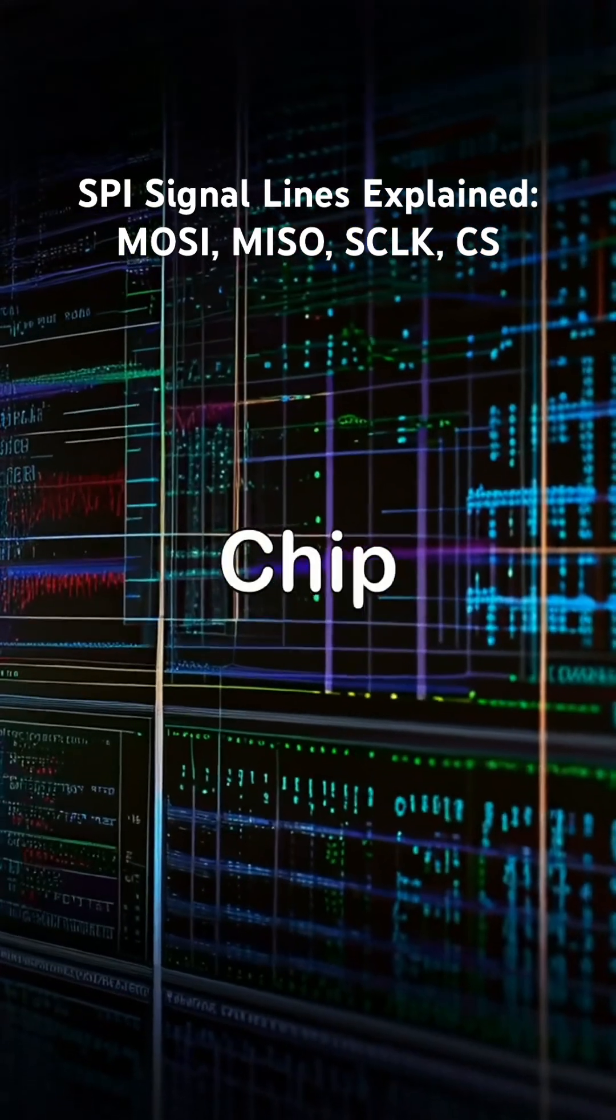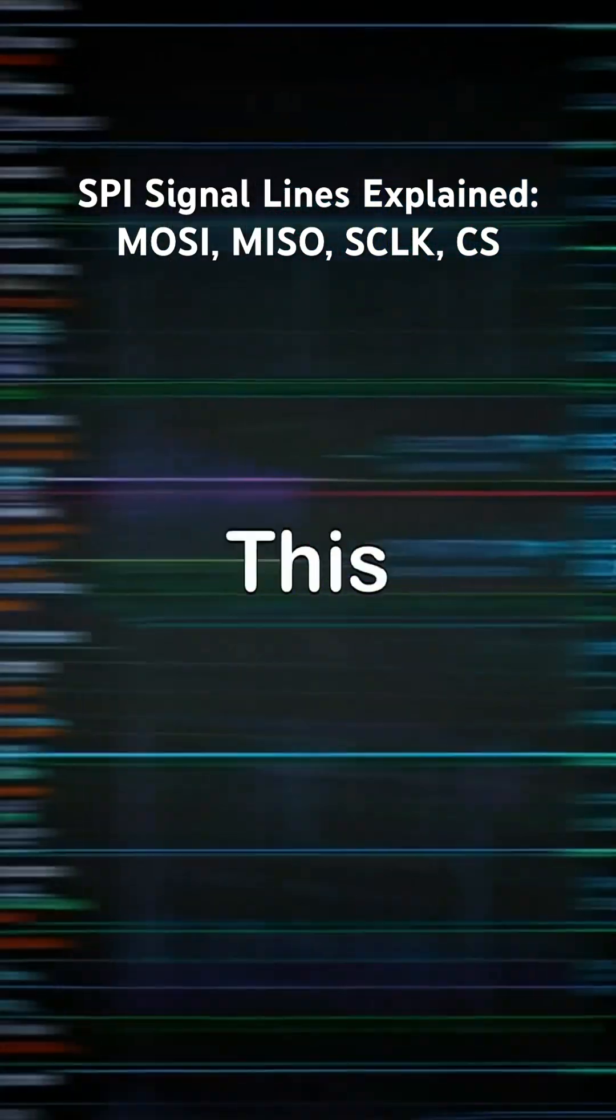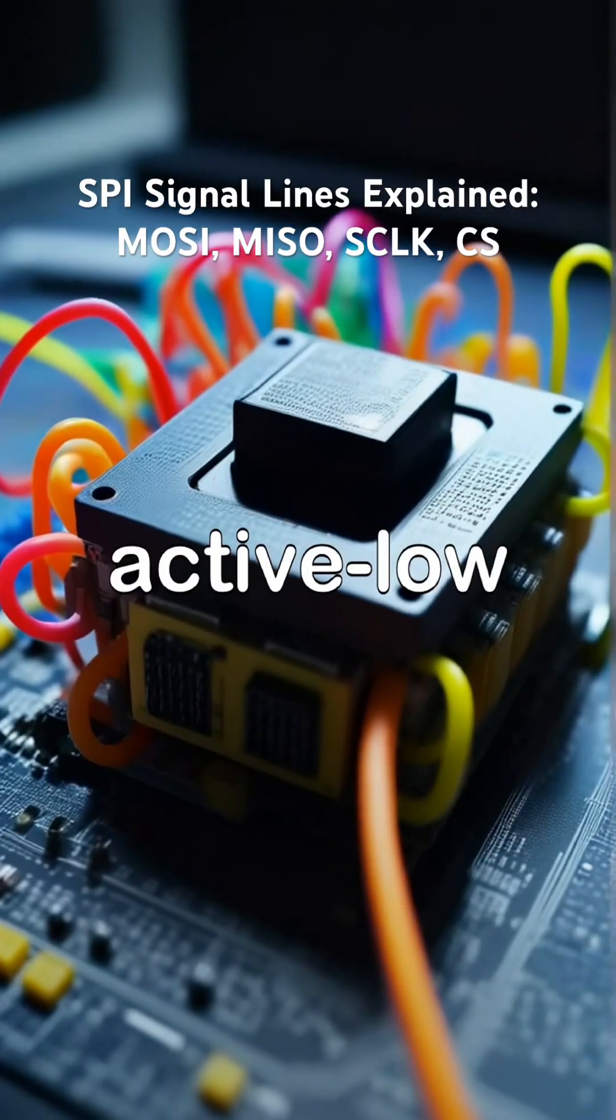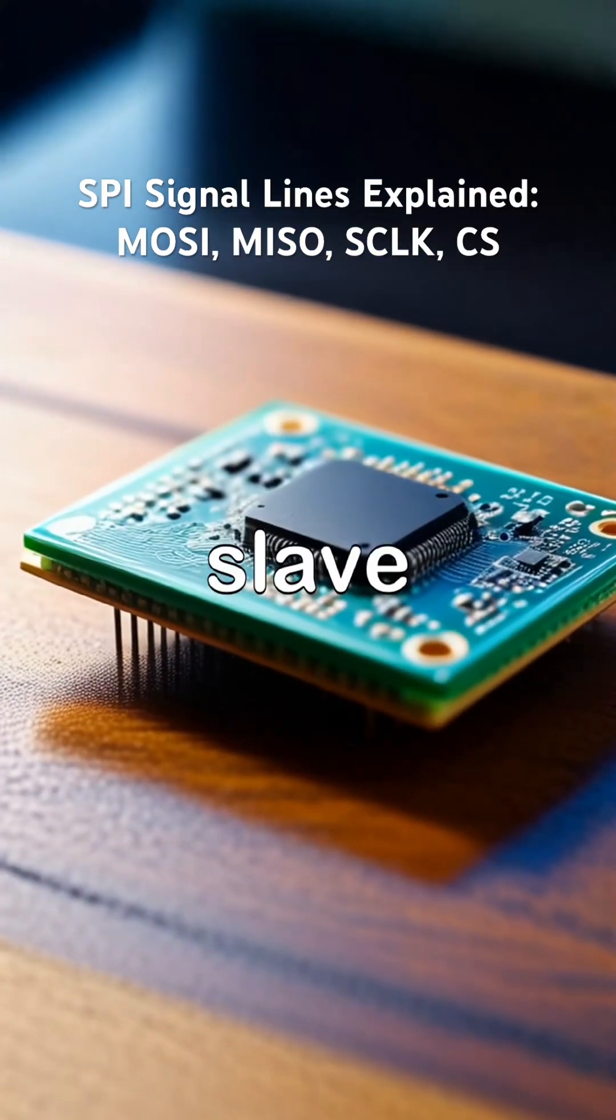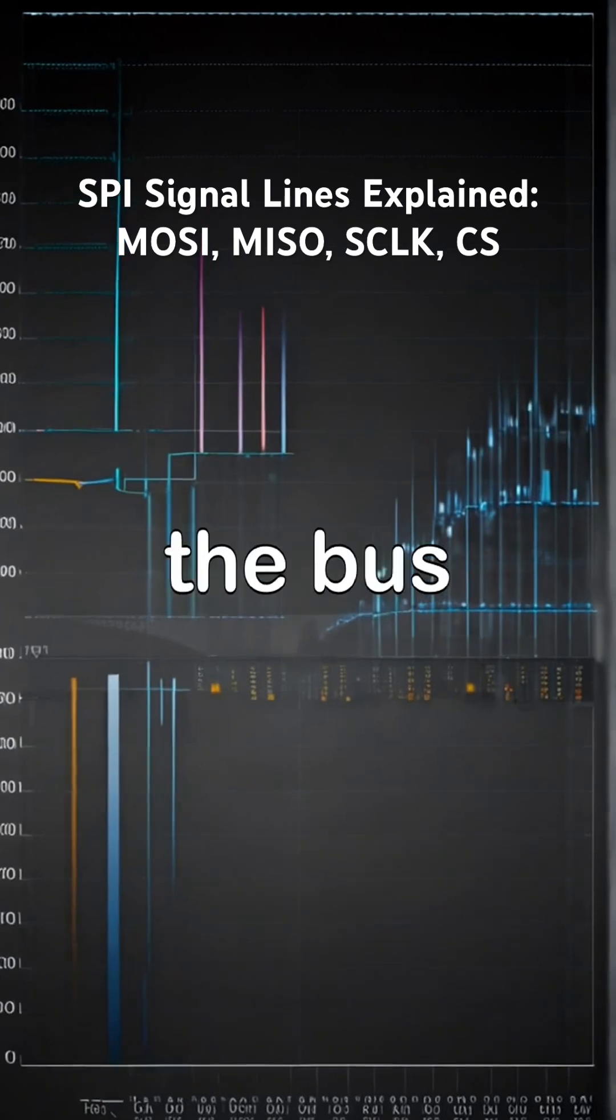CS, or SS, Chip Select, Slave Select. This line enables a specific slave, usually active low. When CS is low, slave is active. When CS is high, slave ignores the bus.